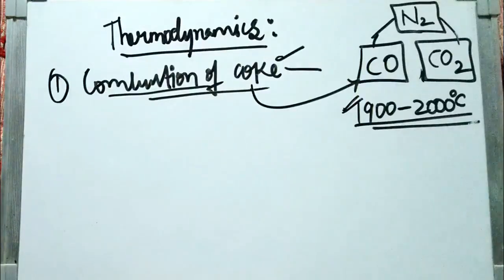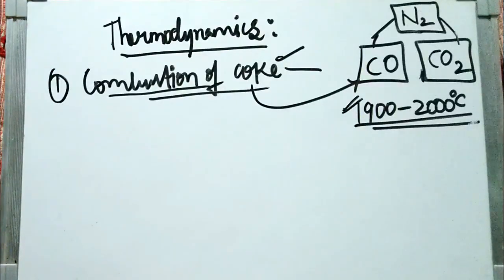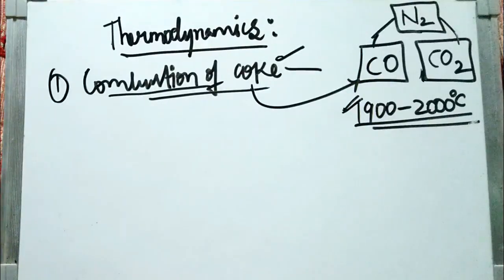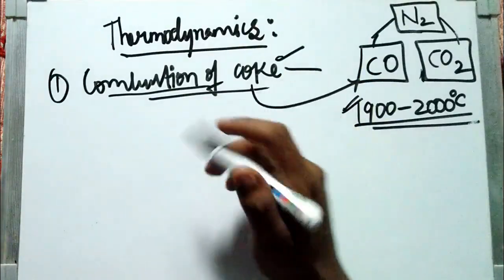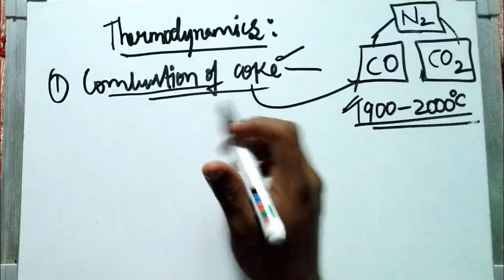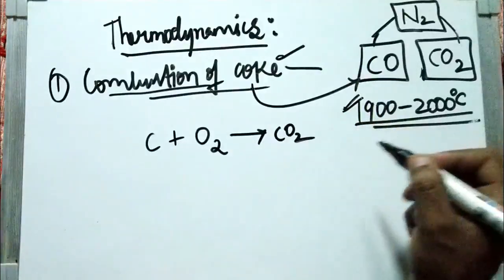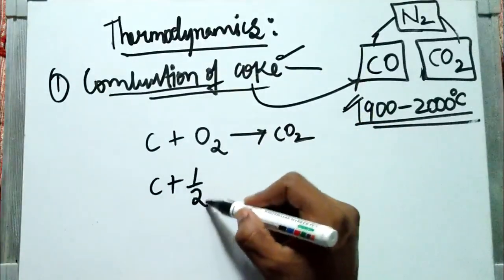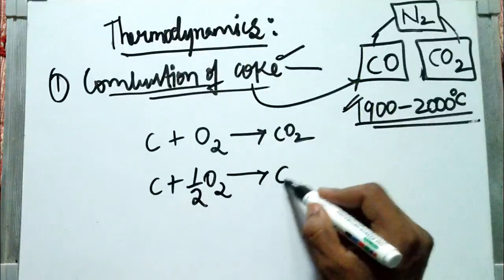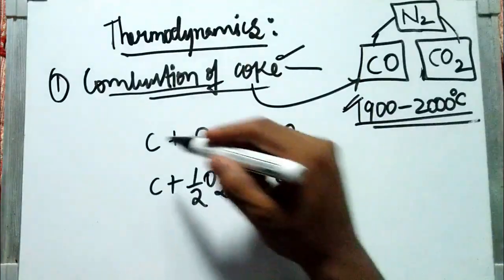We call this counter-current interaction. By this counter-current interaction between the hot gases and the bed of solids, the solids get heated up and melt. The melting zone starts in the bosch or in the lower stack. The main reactions being discussed are: carbon plus O2 gives CO2, and carbon plus half O2 gives CO.